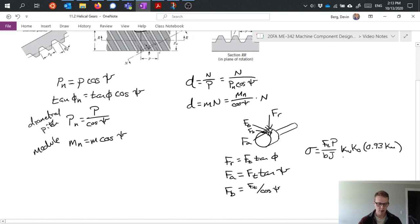The only other main difference then is in the geometry factor J, which we now read from figure 16.8 in the textbook rather than the figure from the spur gear chapter. It takes into account the helix angle and adjusts those values accordingly.